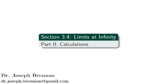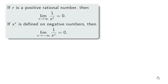Hello and welcome to the second video of section 3.4 on calculating limits at infinity. In the first video of this section, we made note of the result: for any positive rational r, the limit as x approaches either positive or negative infinity, if it exists, of 1 over x to the r is 0.